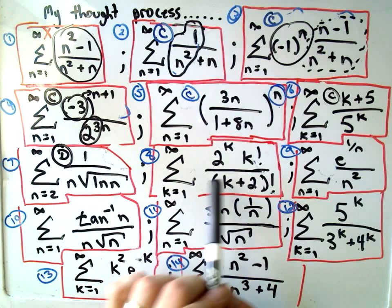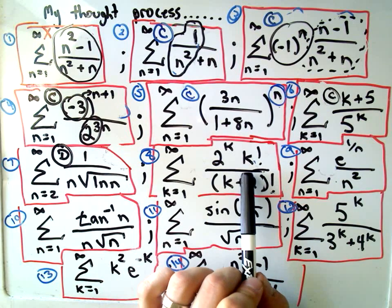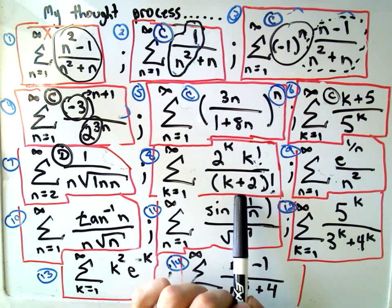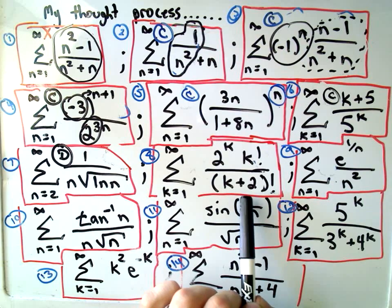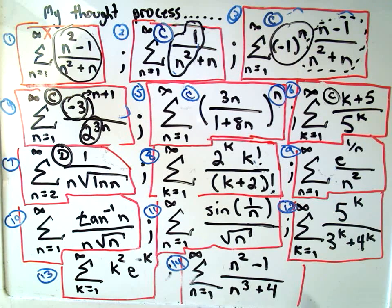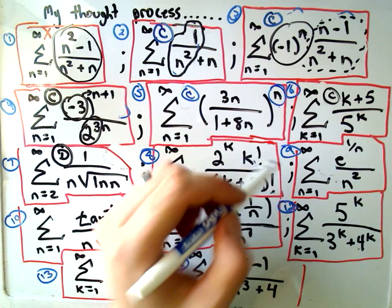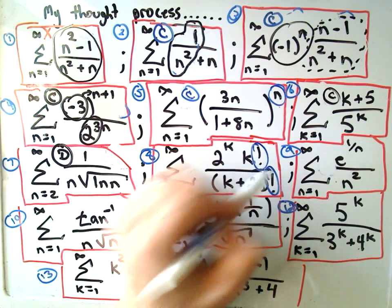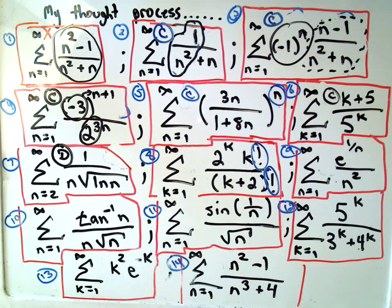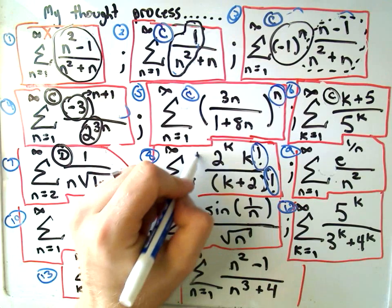Okay, number eight. In this one, we have 2 to the k times k factorial over k plus 2 factorial. And the thing that sticks out to me, for sure, in this problem is the factorials. Anytime I see a factorial, almost always you can do that using the ratio test. And it seems like you typically do want to use the ratio test. It seems like the ratio test is a nice, clean way to help get rid of the factorials. And I believe that this one should also converge.